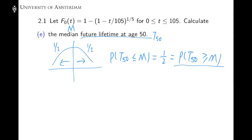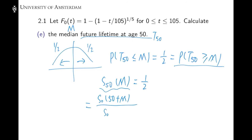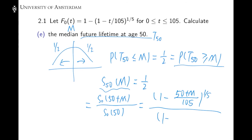Taking a closer look at this probability, it is exactly S50(m), and this equals one half. Based on this, we want to solve for the value of m. Expanding this term using the very important formula, this is S0(50 + m) over S0(50), which equals [1 − ((50 + m)/105)^(1/5)] divided by [1 − (50/105)^(1/5)] = 1/2. Solving this equation gives us m.